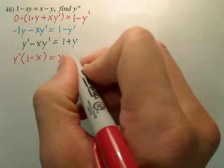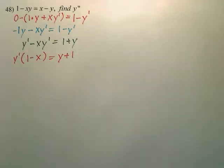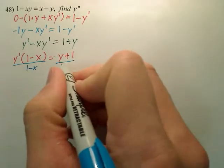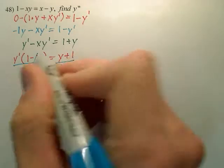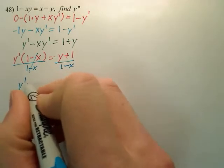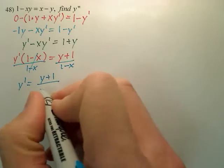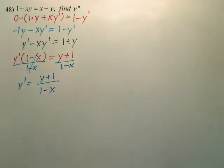I'm going to change this to y plus 1. And from there, you've got to get y prime by itself, so let's divide the 1 minus x over. And I now have y prime equals y plus 1 over 1 minus x. That's my first derivative.